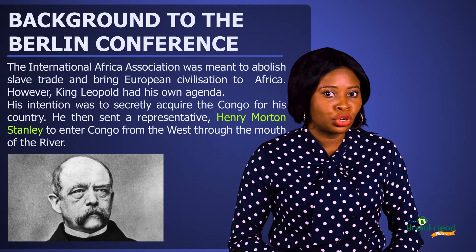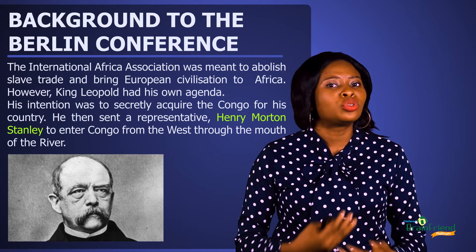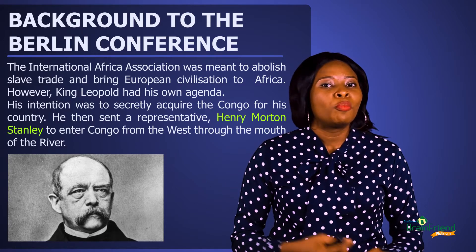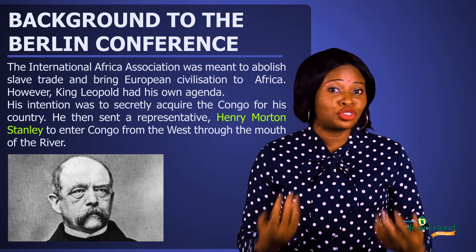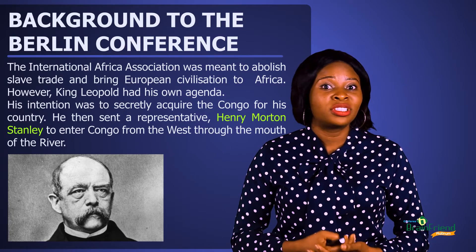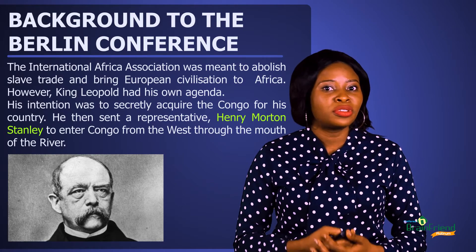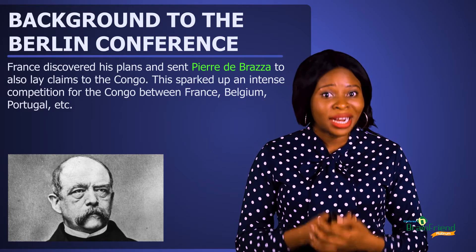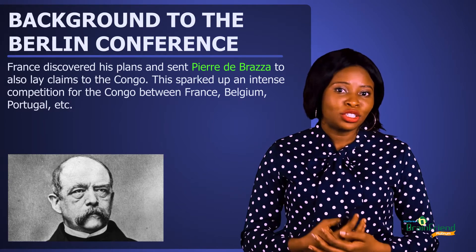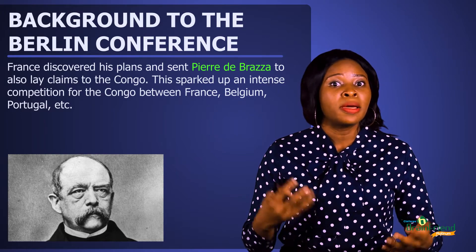The main aim of this association was to abolish slave trade in parts of Africa where it still existed and to bring about civilization to Africa. But King Leopold II had ulterior motives — he was also interested in acquiring territories for his home country. He sent a representative named Henry Morton Stanley to go into the Congo from the west through the mouth of the river. France soon discovered King Leopold's ulterior motive and sent a representative named Pierre de Braza to lay claims to the Congo. By 1884, the acquisition of Congo became very intense as it was rich in raw materials and seen as a commercial waterway across Africa.